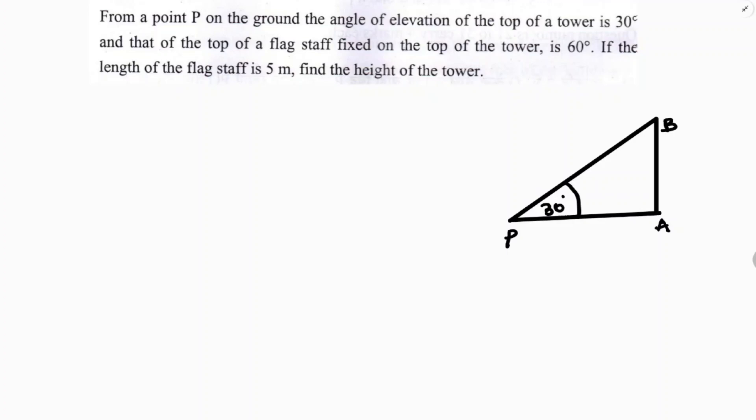From the same point, the angle of elevation of the flagstaff which is fixed on the top of the tower. So here, we have a flagstaff BC. BC is a flagstaff. The angle of elevation of the flagstaff is 60 degrees. This total is 60 degrees.